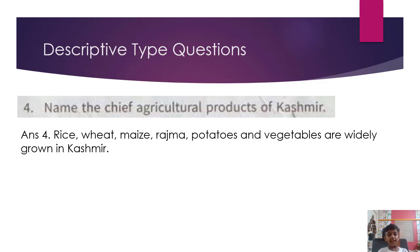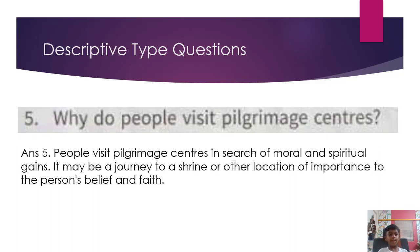Name the chief agricultural products of Kashmir. Answer: Rice, wheat, maize, rajma, potatoes, and vegetables are widely grown in Kashmir. Why do people visit pilgrimage centers? People visit pilgrimage centers in search of moral and spiritual gains. It may be a journey to a shrine or other location of importance to the person's belief and faith.